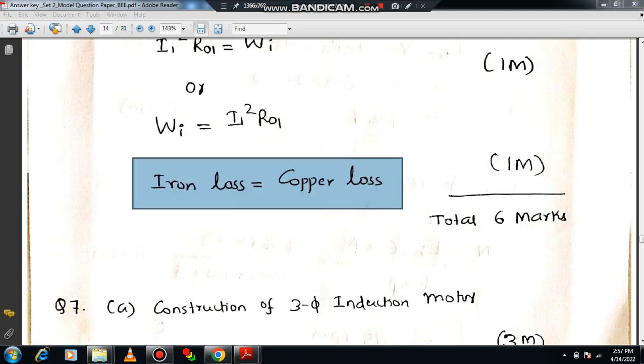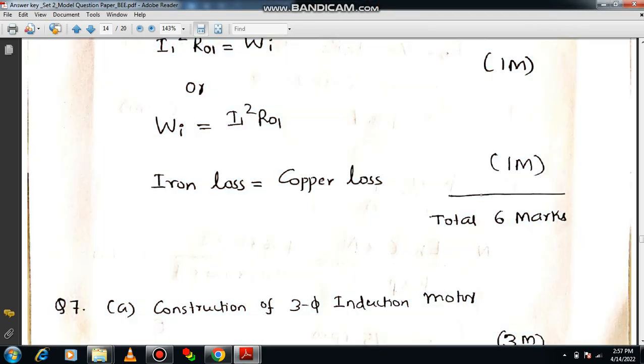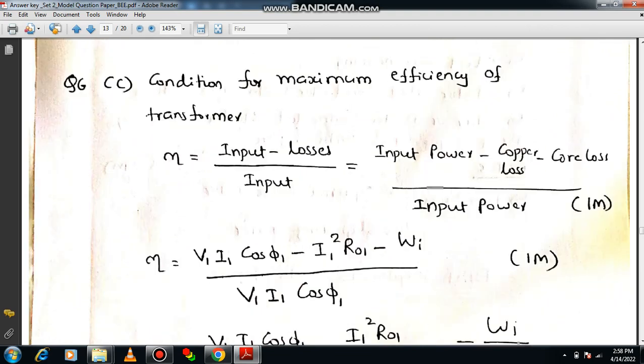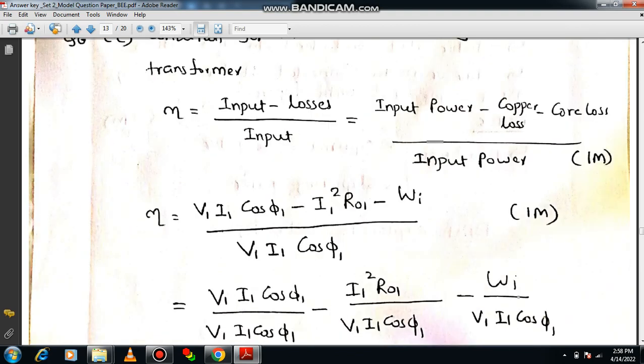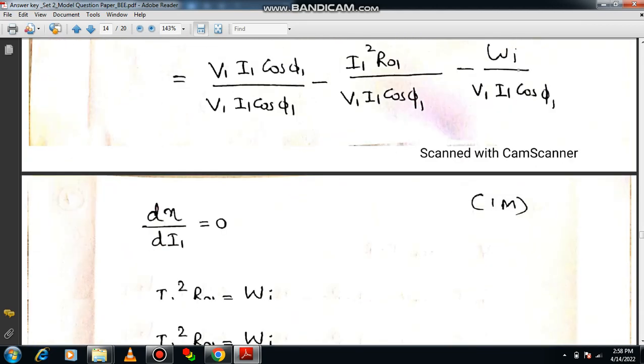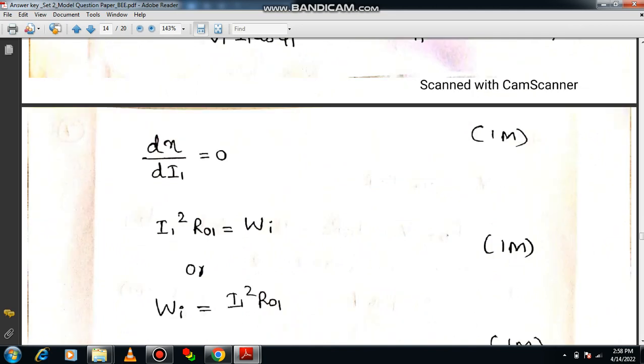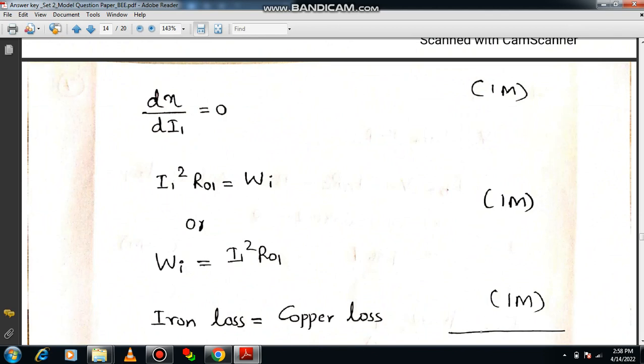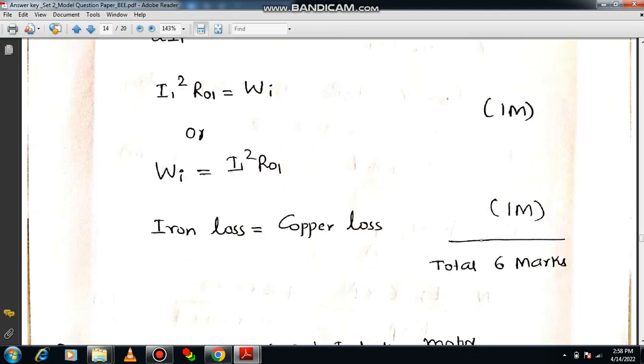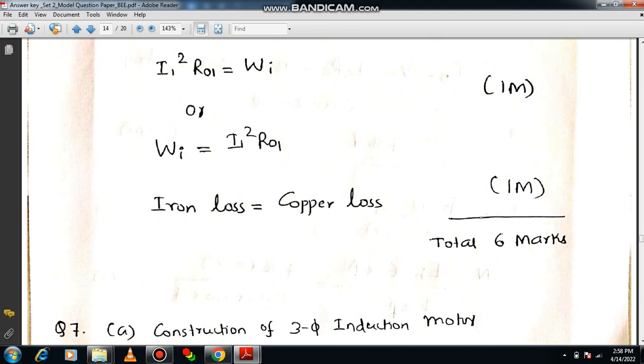You are informed to derive the expression for condition for maximum efficiency. So this is the way how to answer this question. First you can write the basic equation. Then come back to the equation with the certain variables. Then divide accordingly. Then you have to recall the principle of maxima or minima theory. Then do the differentiation. It is a systematic procedure. Please undergo the systematic procedure such that you can get the complete score. Finally you should write iron loss will be equal to copper loss. So this is what the examiners are expecting from student side.